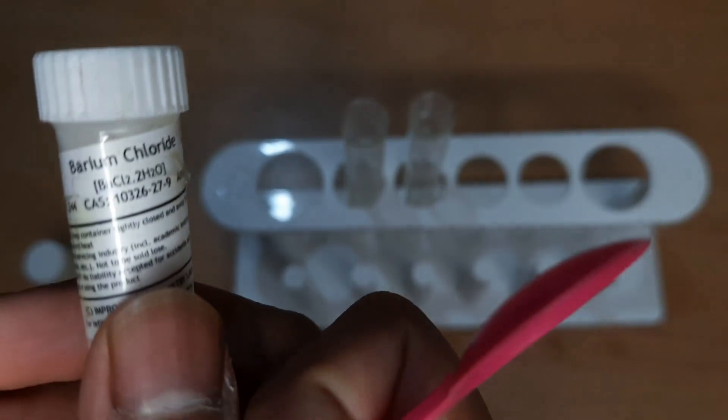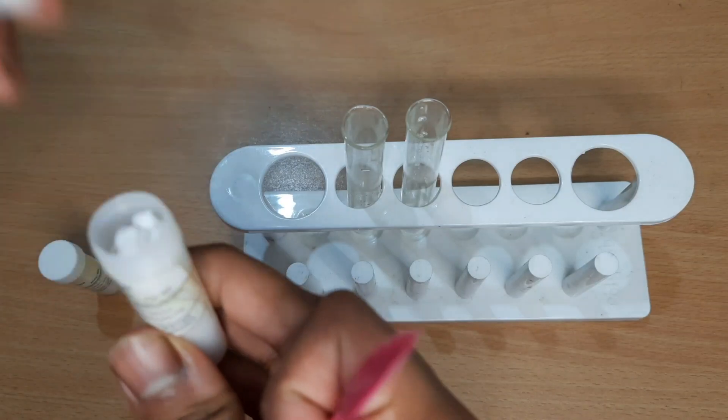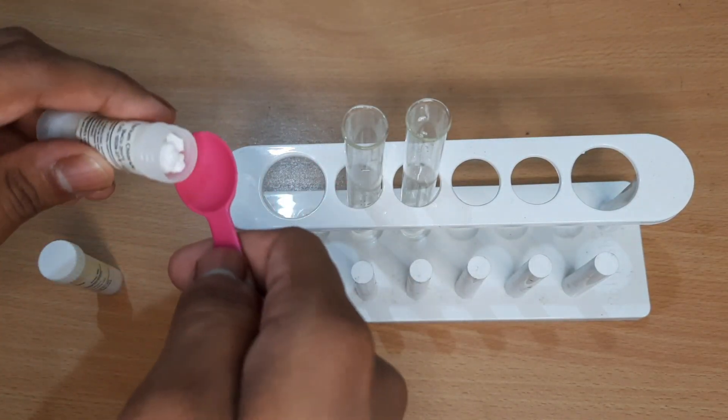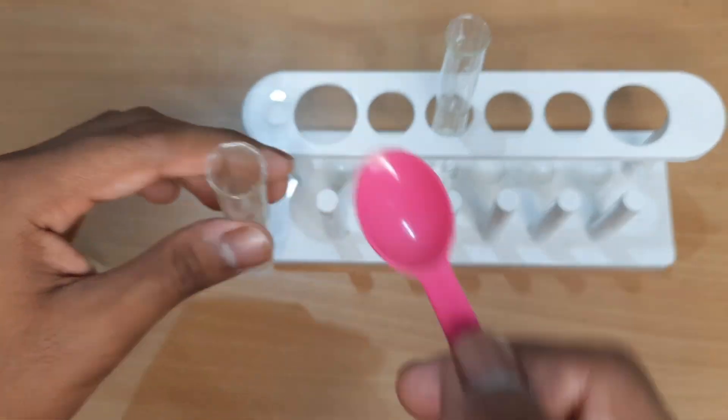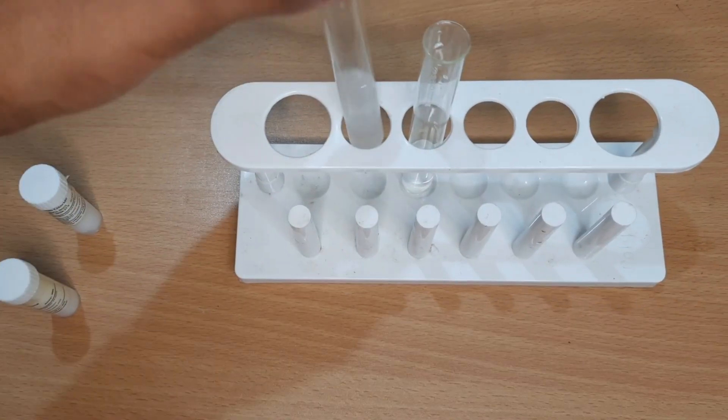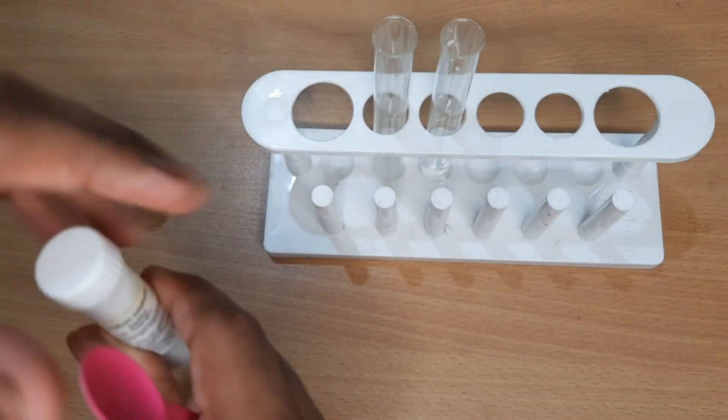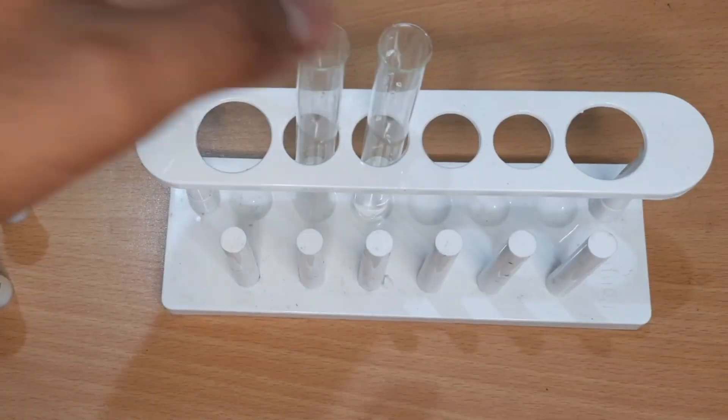Take about 3 ml of barium chloride solution in a test tube. In another test tube, take about 3 ml of sodium sulfate solution.